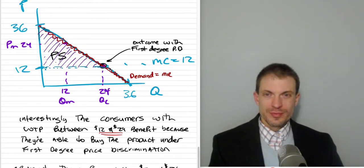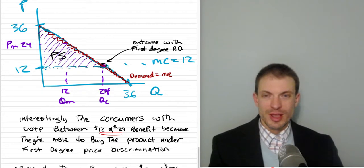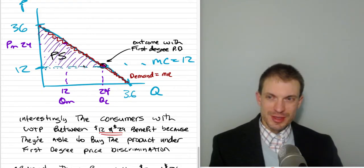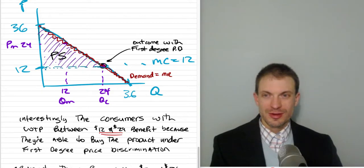The outcome with first-degree price discrimination is going to be setting exactly the same quantity that the competitive market would be producing at. However, rather than this all being consumer surplus, it's going to be producer surplus because the price you're setting for each unit is exactly corresponding to the consumer's willingness to pay, the height of the demand curve at that unit.